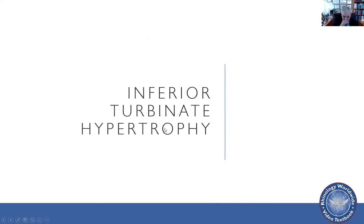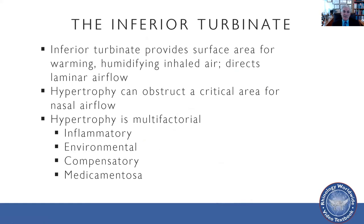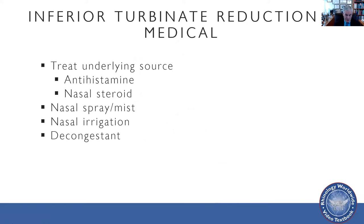Now let's talk about the inferior turbinate. Inferior turbinates are very important — they provide surface area for warming and humidification of inhaled air, and they help direct laminar airflow. Hypertrophy can obstruct critical areas for airflow, and hypertrophy is multifactorial: it can be inflammatory, environmental, compensatory, or from excessive medication use causing rhinitis medicamentosa. So the first thing you should do for inferior turbinate hypertrophy is try medical treatment — anti-inflammatories, antihistamines, nasal steroids, or other topical treatments to see if that will improve the turbinate hypertrophy.